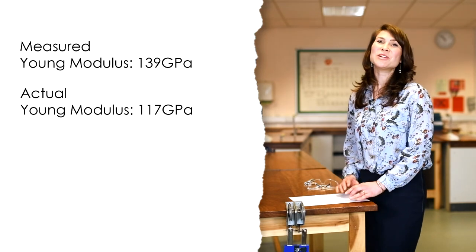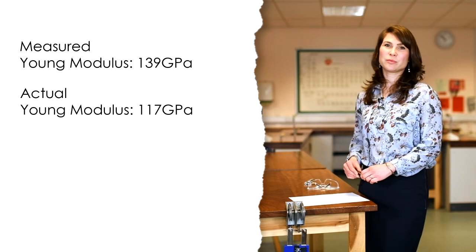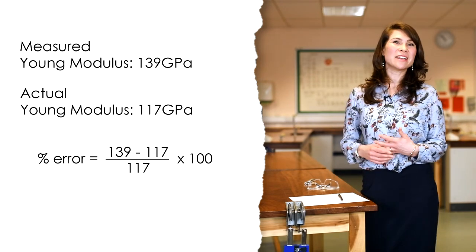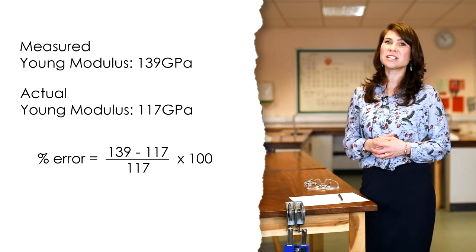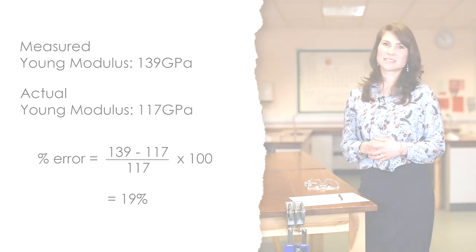We can compare this to the known value of the Young's modulus of copper, which is 117 gigapascals. We can now take a percentage error in our value compared to the theoretical value, which gives us a percentage error of 19%.